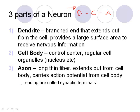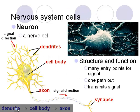The axon extends out from the cell body and carries the action potential — the impulse or message — from the cell body to wherever it needs to go. At the end of the axon are synaptic terminals, which we'll look at visually in a moment.